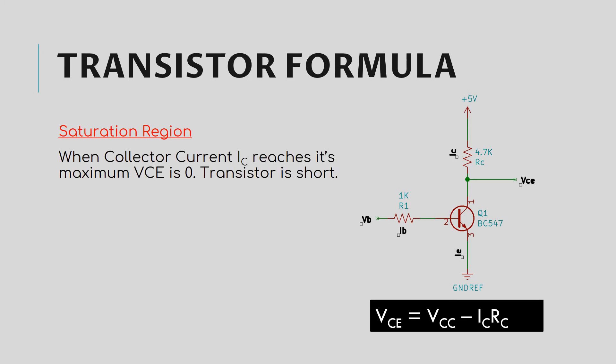In saturation region, when collector current IC reaches its maximum, this factor IC into RC becomes almost equal to VCC. This makes VCE zero, that means there is no output voltage and the transistor is short.